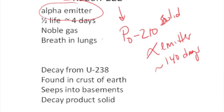And so it's found from the U-238, which is in the crust of the Earth. And so what has happened, people have found, is the radon-222 can collect in basements.